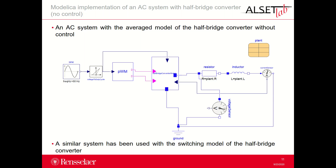An AC system with the average model of the half-bridge converter without any control is illustrated in this slide. This system has been used to implement control strategies for regulating the output current measured by the current sensor in this block diagram and indicated in the open-loop system. The sinusoidal source is used to calculate the duty cycle D, necessary for the modulation factor M that is one of the inputs of the half-bridge converter block for the average model. The output of the half-bridge converter is connected to the AC system characterized by the components R and L. The current sensor in series with R and L is used to measure the AC output current I, that is fed back as input of the converter and that will be controlled in the following steps.